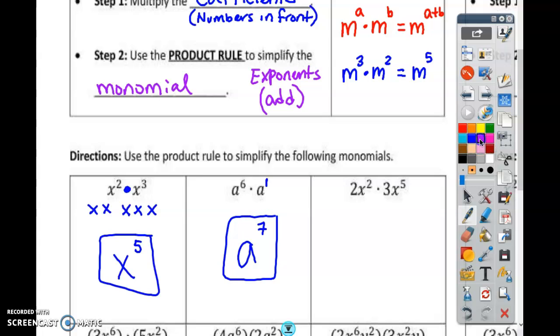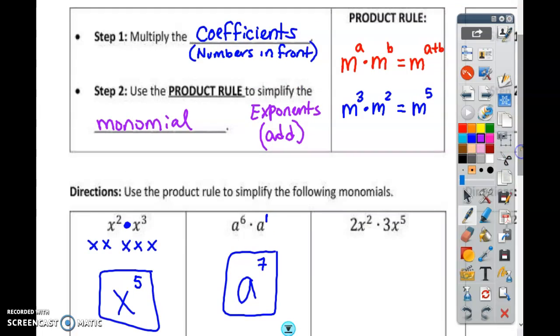What about, remember when I said up here that the coefficients you're going to multiply them? That's these numbers right here. The 2 times 3. Those you multiply. So what's 2 times 3? 6. And then add the 2 and the 5. 7. X to the seventh power.